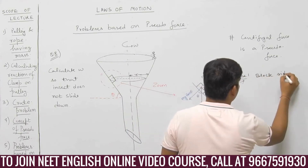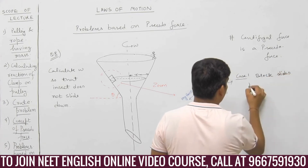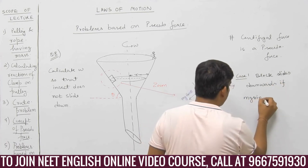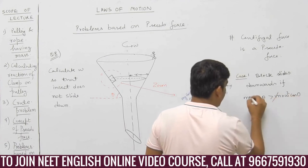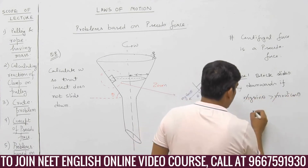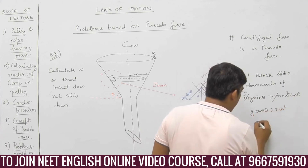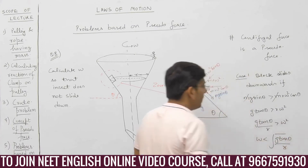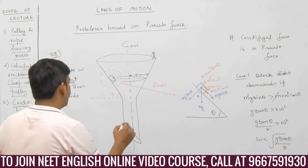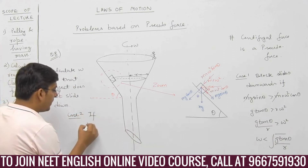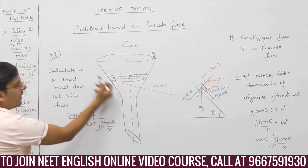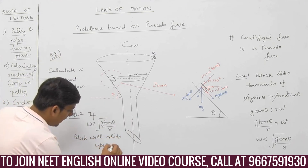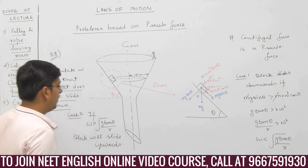Block slides downwards if Mg·sinθ exceeds M·R·ω²·cosθ. M gets cancelled, so g·tanθ > R·ω², meaning g·tanθ/r > ω². So omega less than √(g·tanθ / R) — then the block will slide downwards. However, if omega is greater than √(g·tanθ / R), the block will slide upwards.